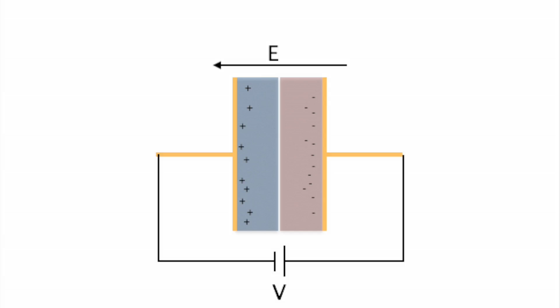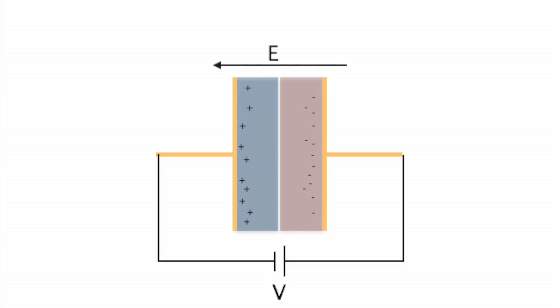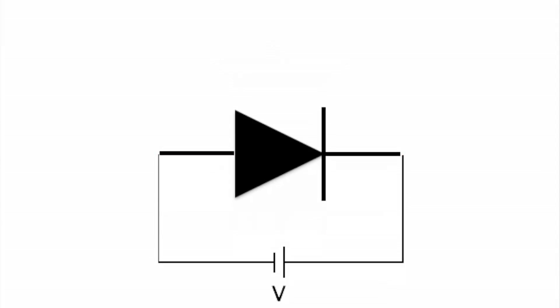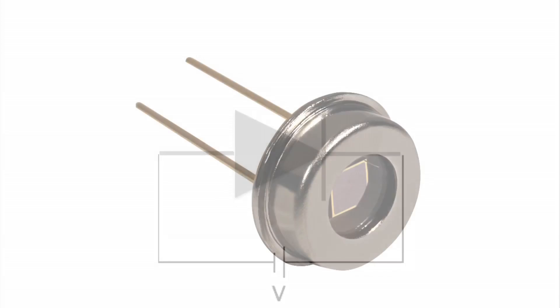This electric field is provided by a voltage across the electrodes on either side of the junction. This voltage produces a reverse bias on the diode, so that in the absence of photoabsorption, there's no current flowing through the diode.